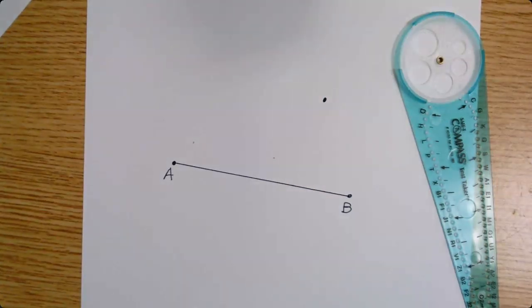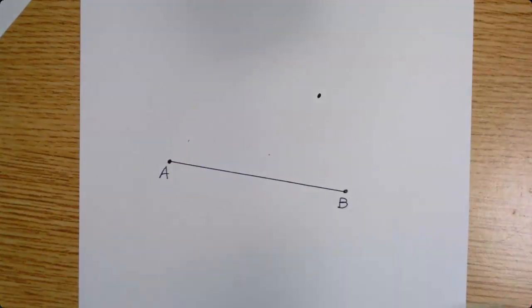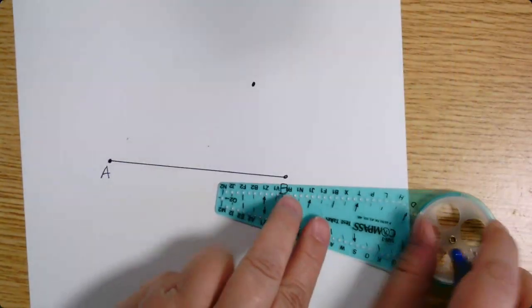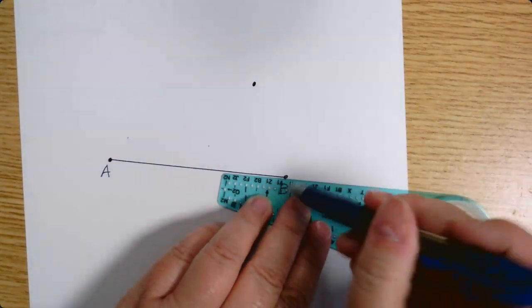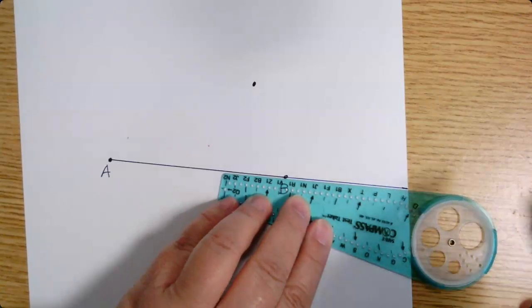All right, the first thing we're going to do, I'm going to make that line segment longer. I'm going to make it long enough that it covers, I'm going to make it as long as I can, basically, that it doesn't go off my page. Well, even if it does go to the very edge of the page.